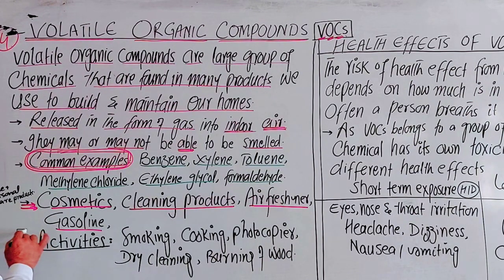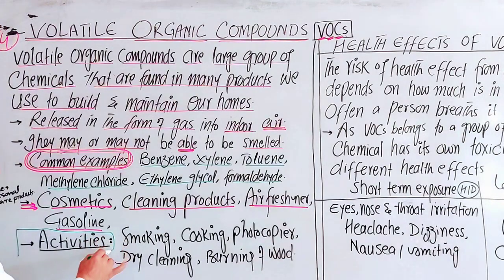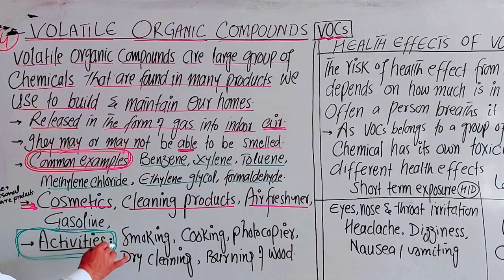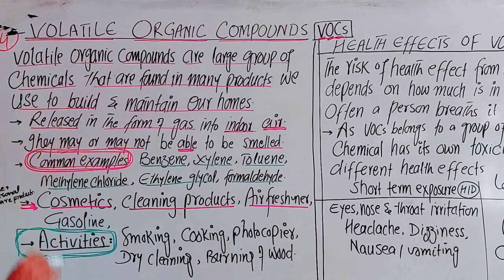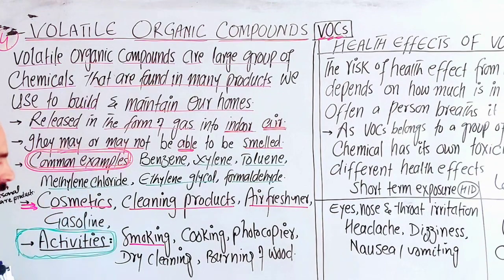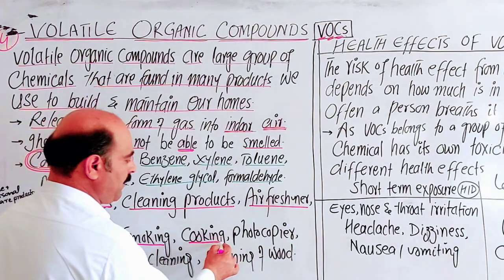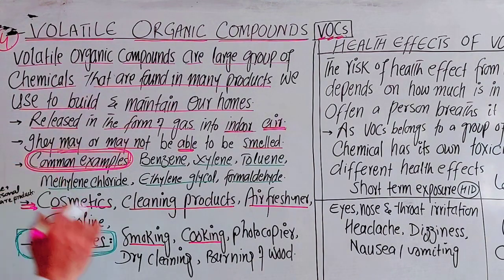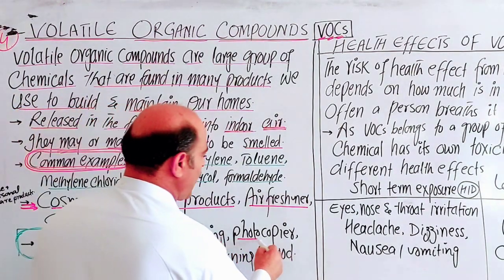Examples of volatile organic compounds released into the atmosphere due to human activities include: smoking, cooking, and use of photocopier machines. These human activities all contribute to the release of VOCs into the indoor and outdoor atmosphere.